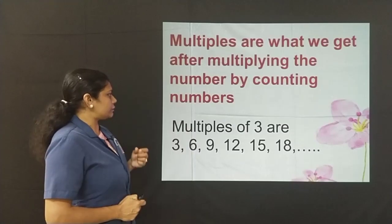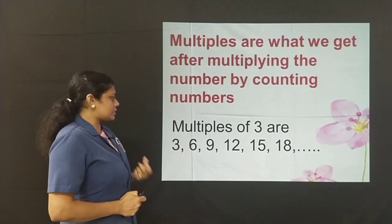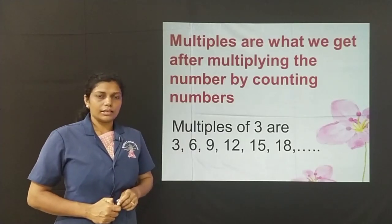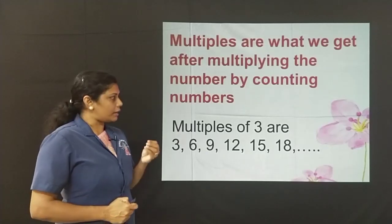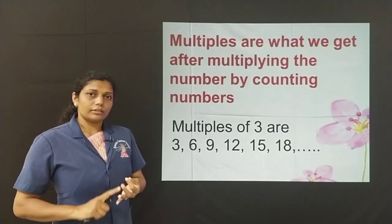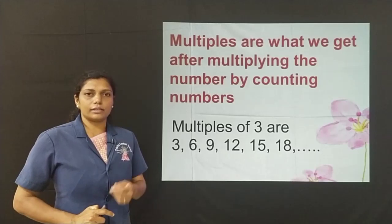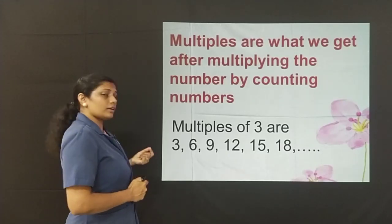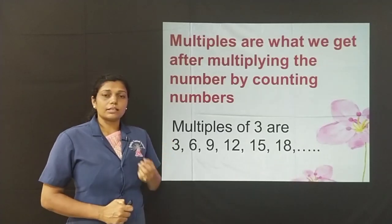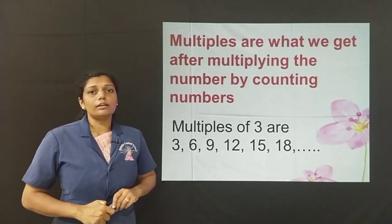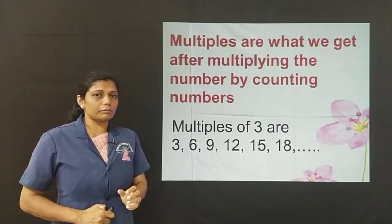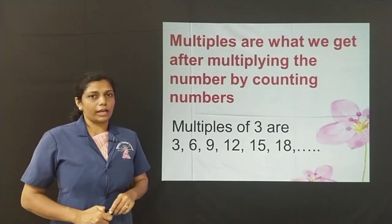For example, the multiples of 3 are 3, 6, 9, 12, 15, 18 and it continues. Isn't it easy? How did I get these multiples? I multiply 3 first with 1, second with 2, then with 3, then with 4 and I continue to get the multiples. So, 3 ones are 3, 3 twos are 6, 3 threes are 9. In other words, this is like writing your tables. The product that we get when you multiply a number with the counting numbers is nothing but the multiple of that number.